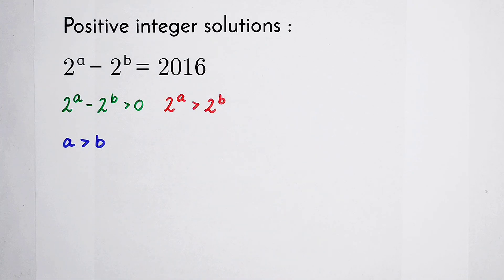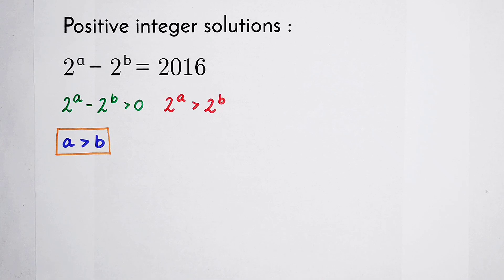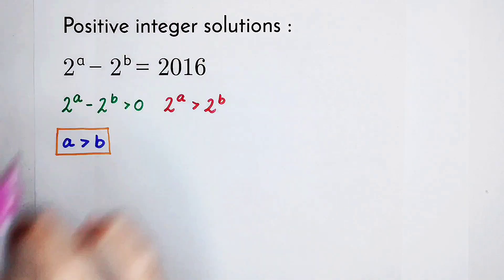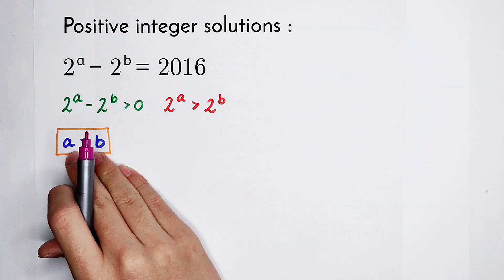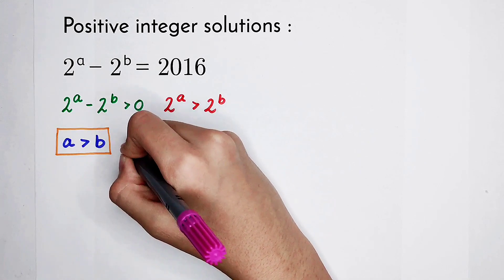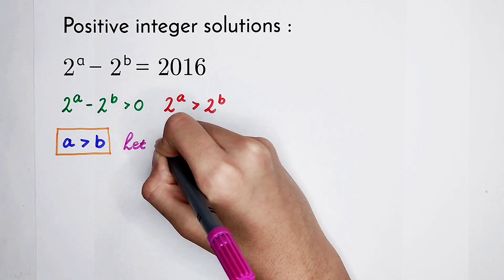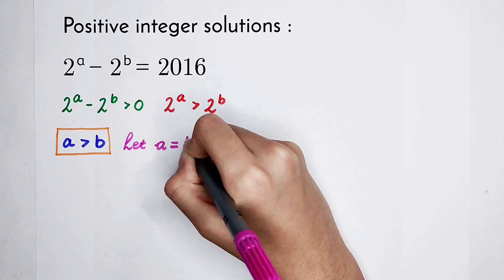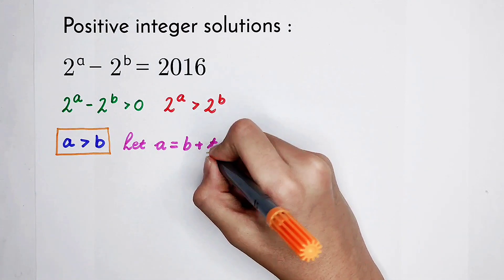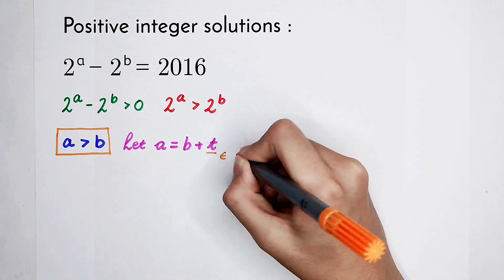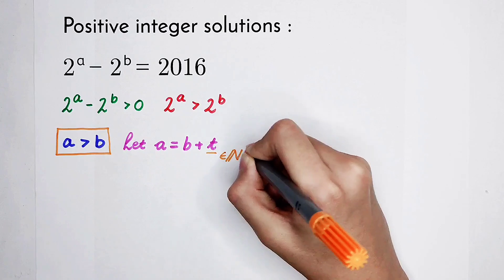We know that A and B are both positive integers. We can substitute by finding another positive integer T such that A is equal to B plus T. Because A and B are both positive integers, T is also a positive integer.